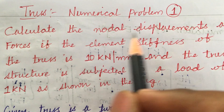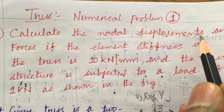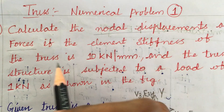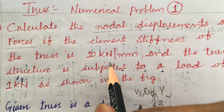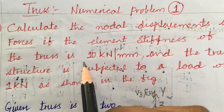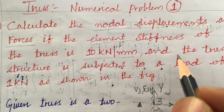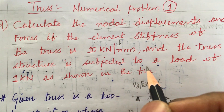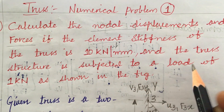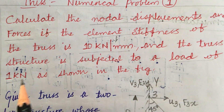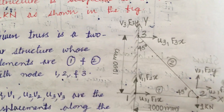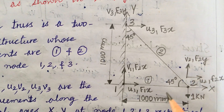The question is all about calculating the nodal displacements and the forces if the elemental stiffness of the truss is 10 kilo Newton per millimeter. The elemental stiffness for the truss is given as 10 kilo Newton per millimeter and the truss structure is subjected to a load of 1 kilo Newton as shown in the figure.